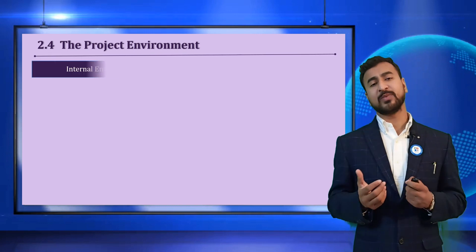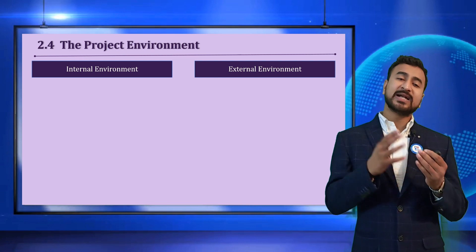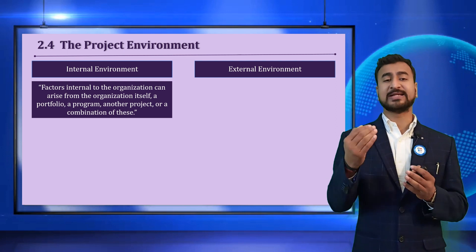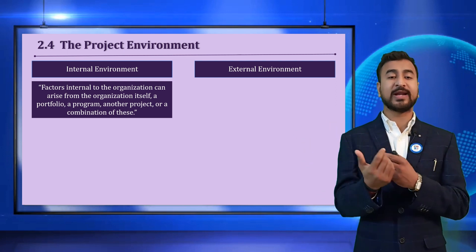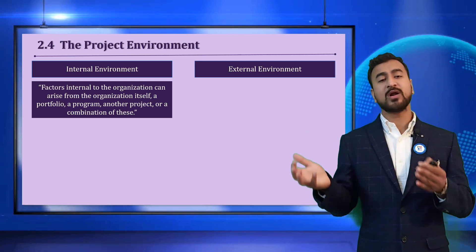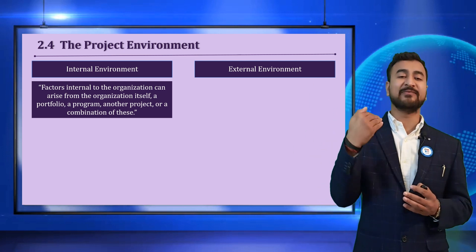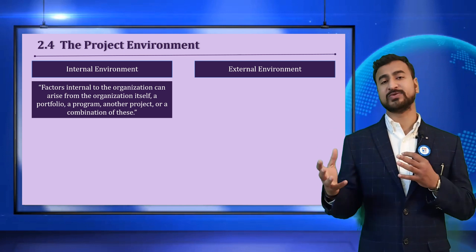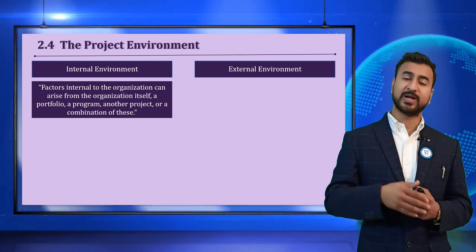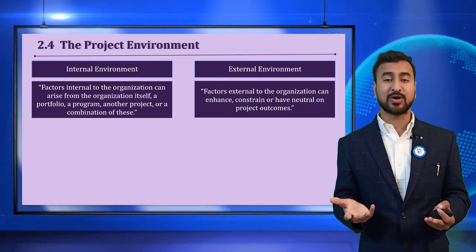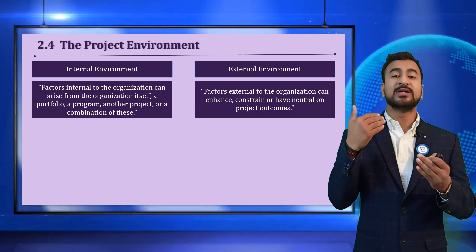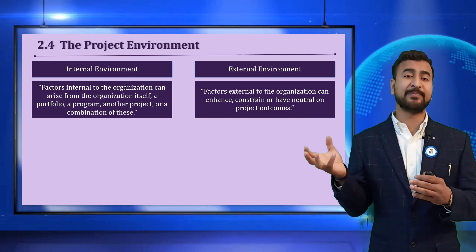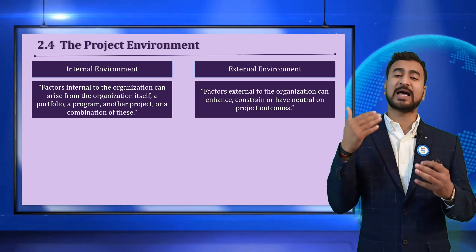The project environment is of two types: internal environment and external environment. Internal environment includes factors internal to the organization — it can arise from the organization itself, like from portfolio, program, or another project, or sometimes a combination of all. This impacts your internal organization politics, process assets, and how you govern the projects. External environment consists of factors that are not in your control, external to the organization, and that sometimes impact the outcomes.